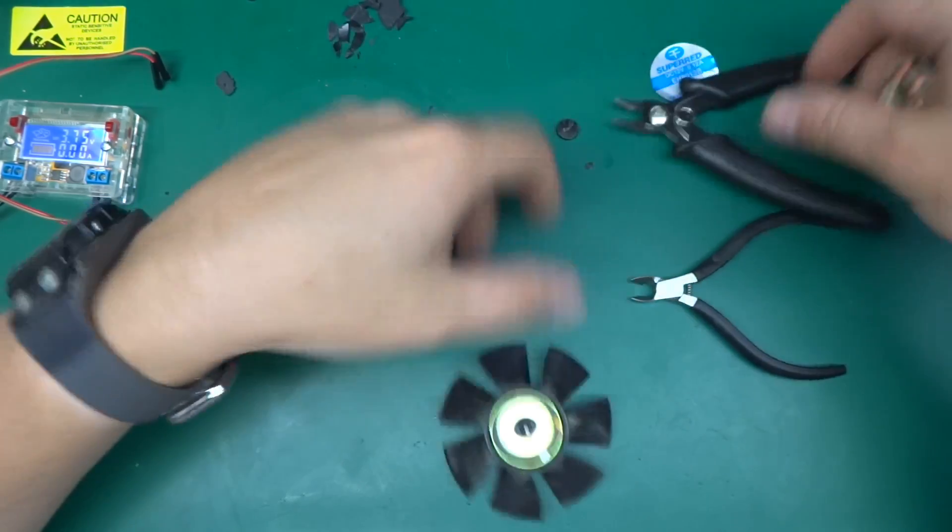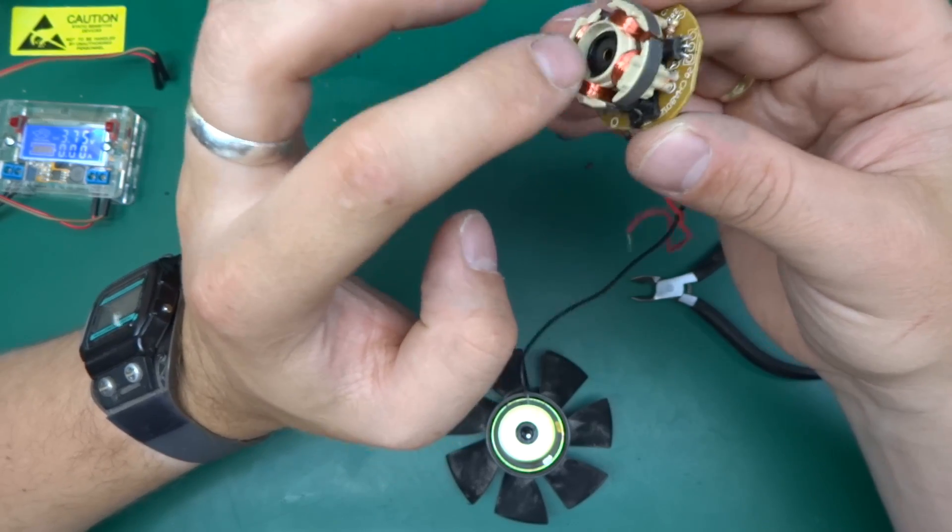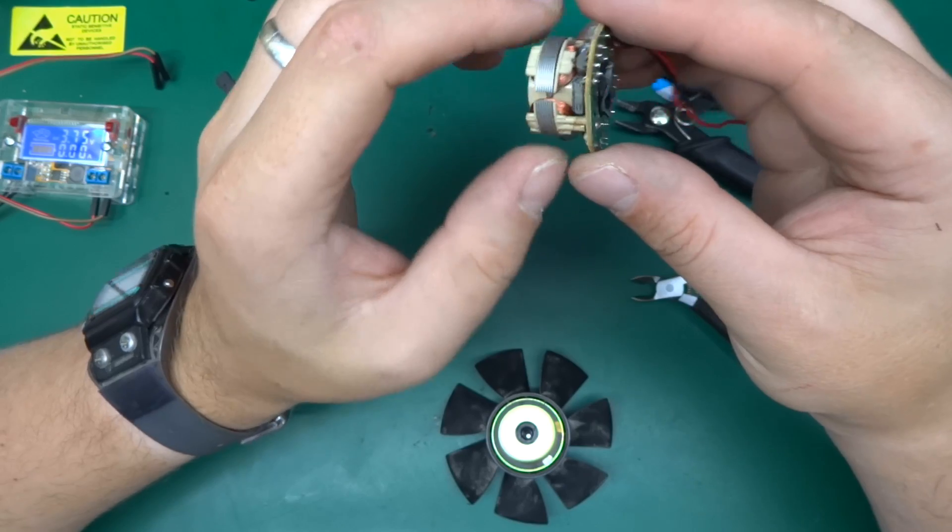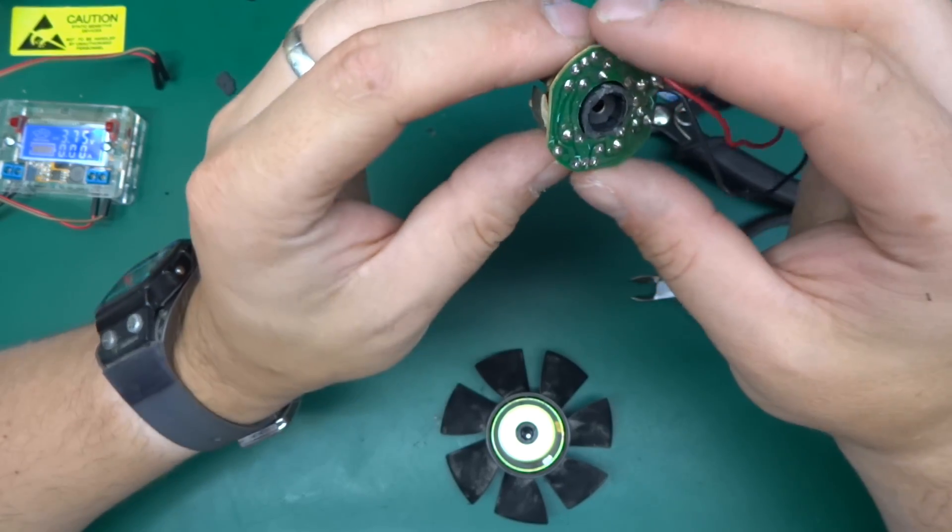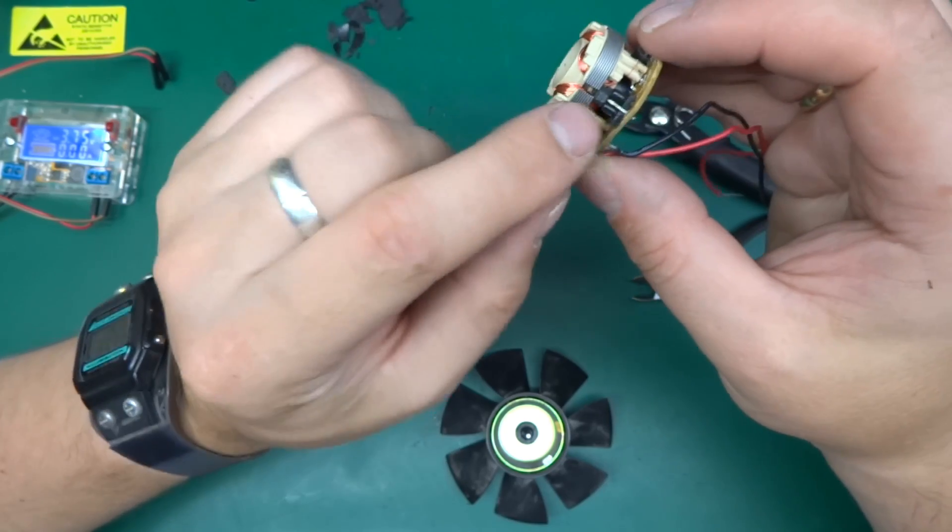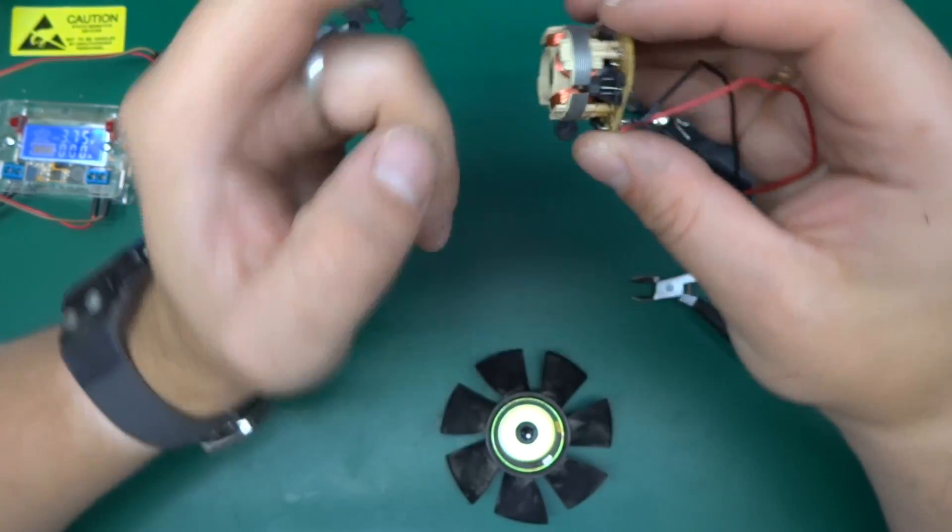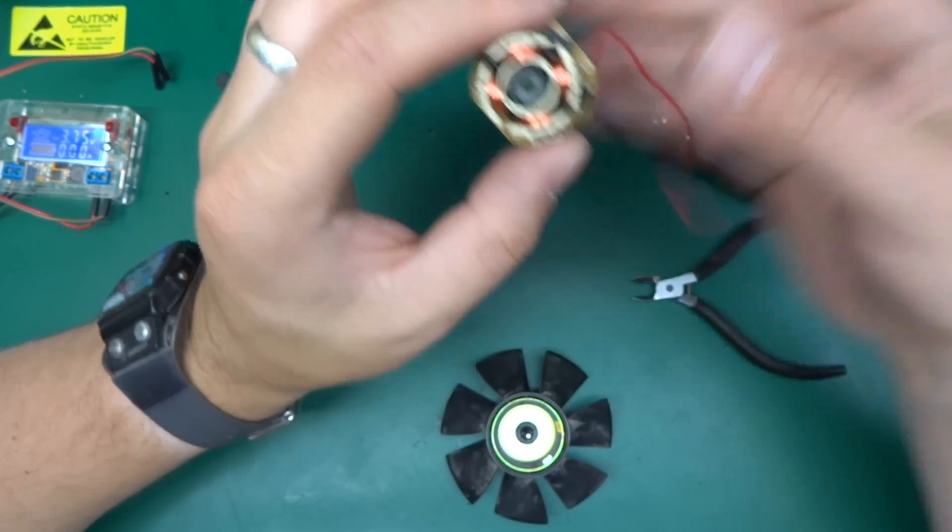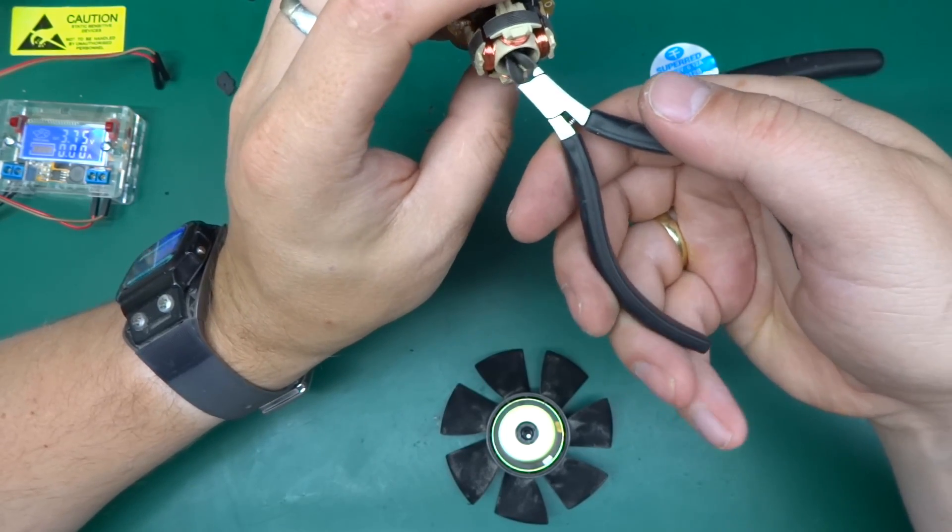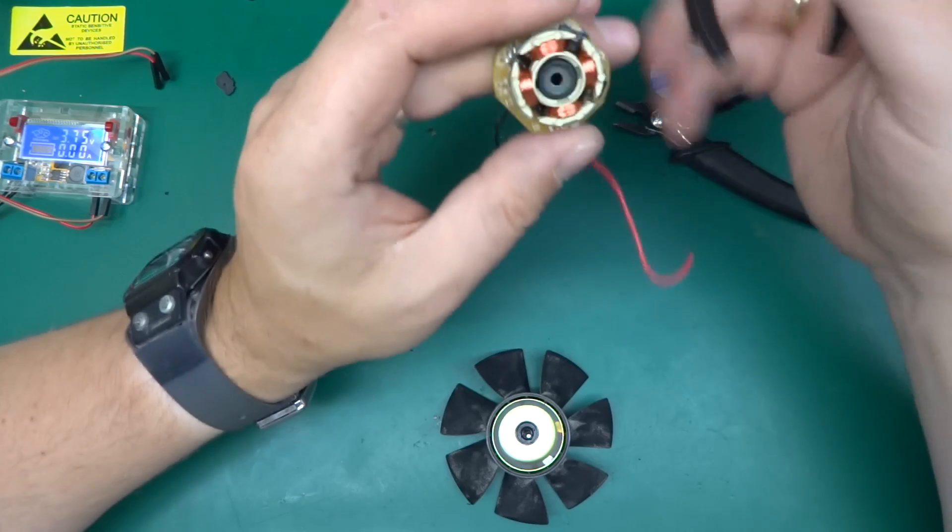And over here we've got the four coils in here and the driver circuitry. And over here we've got a hall effect sensor which detects whereabouts in the rotation the motor is. So there's lots of those little washers.